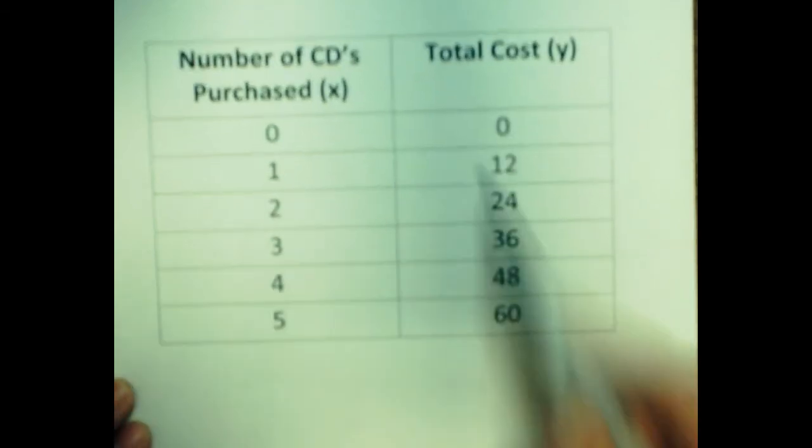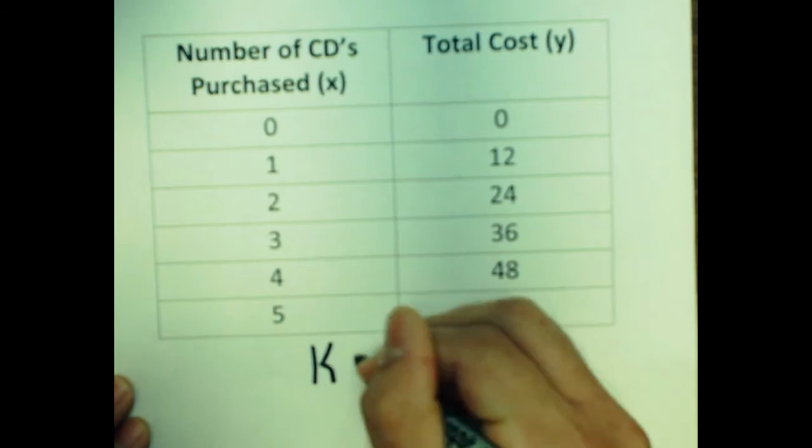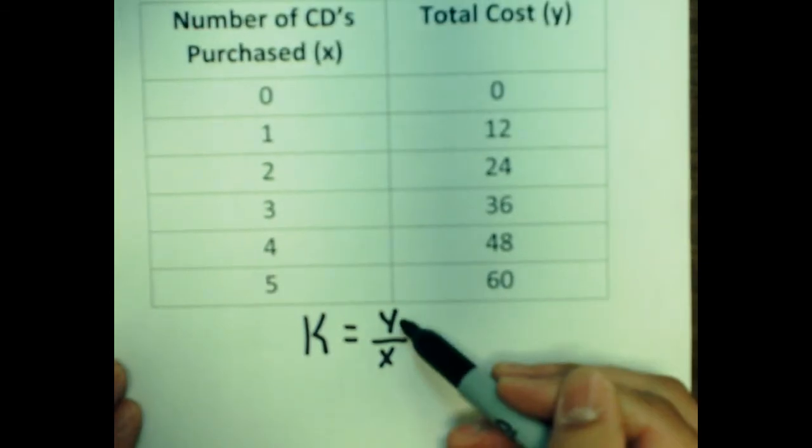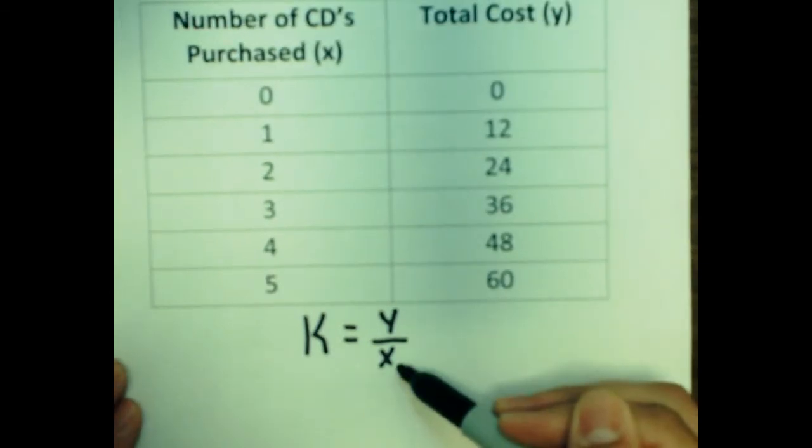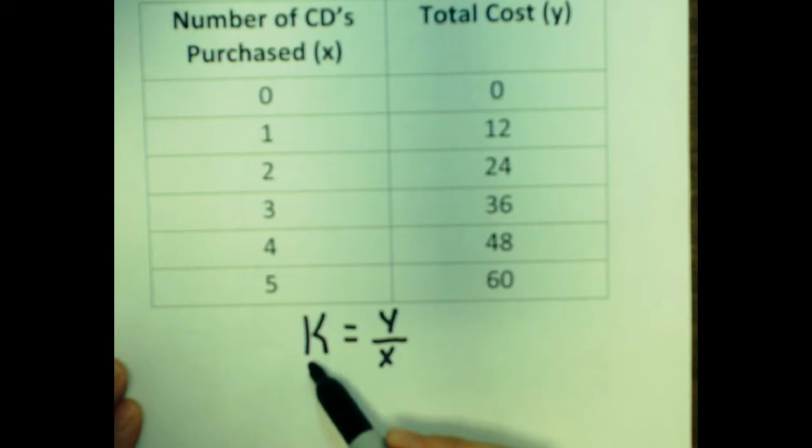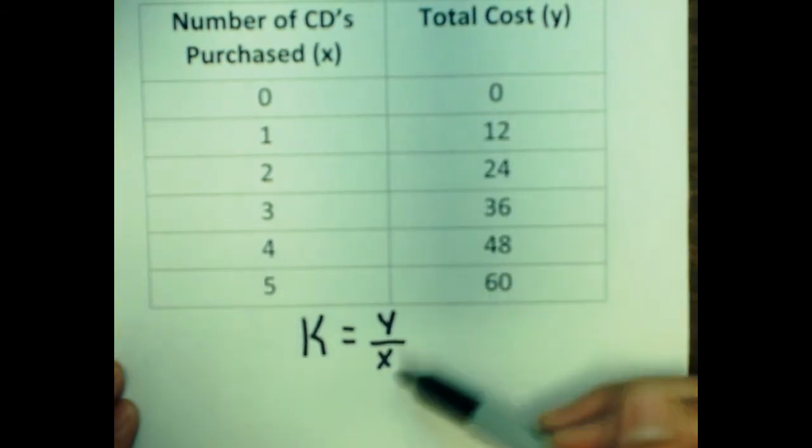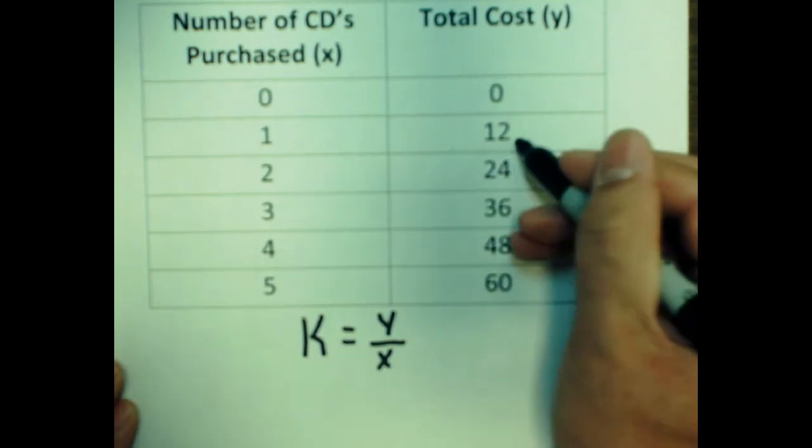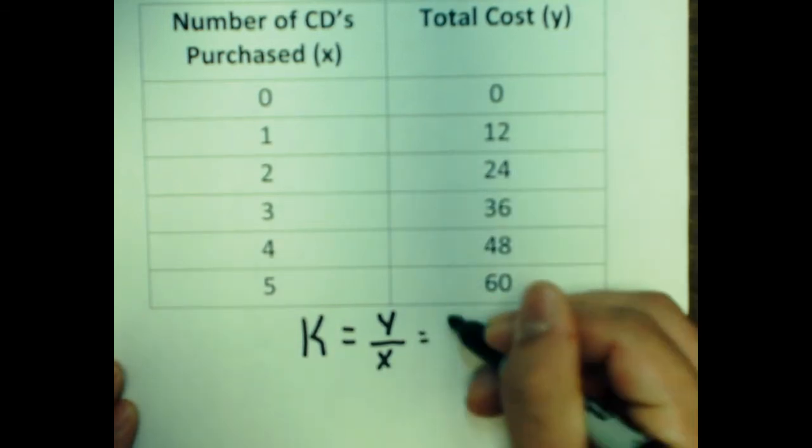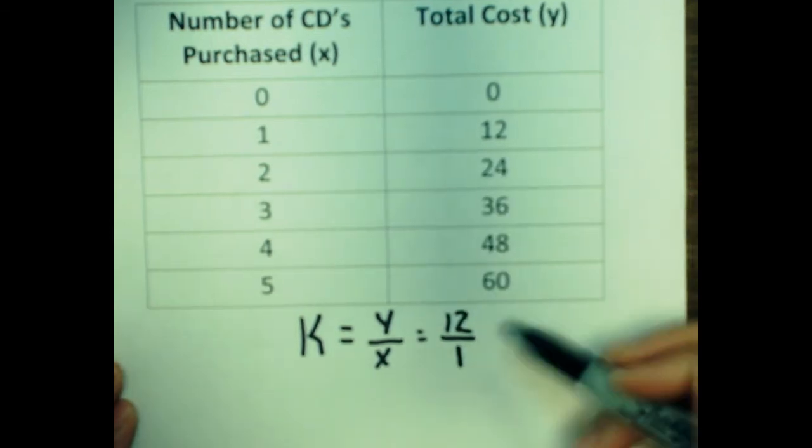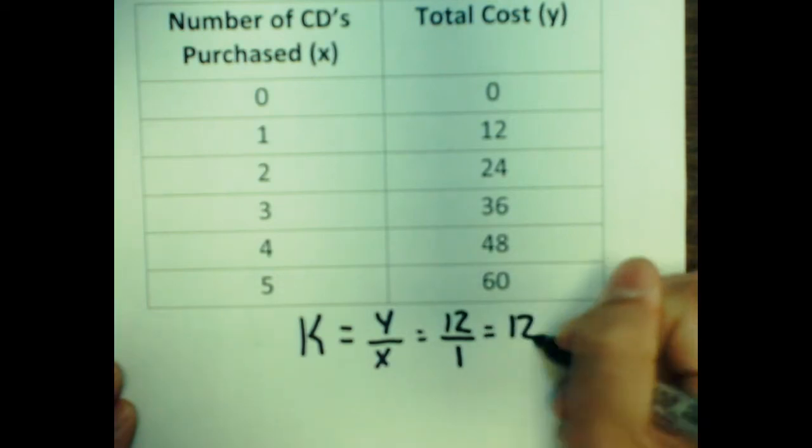One way to do this is to set up your constant of proportionality equation. You simply take your y value and divide it by your x value. K is your constant of proportionality. We're going to go ahead and take our first two values and test and see what we get. So I'm going to take my 12 for my y, one for my x, and divide. 12 divided by 1 is 12.